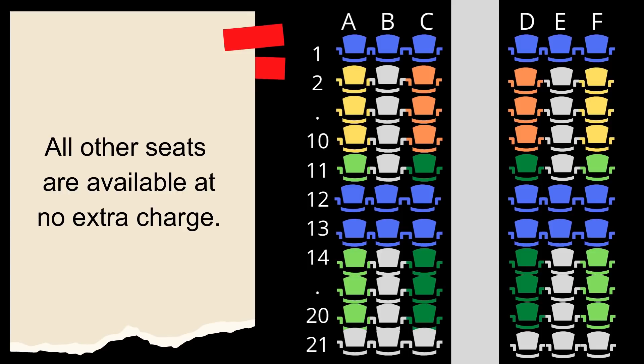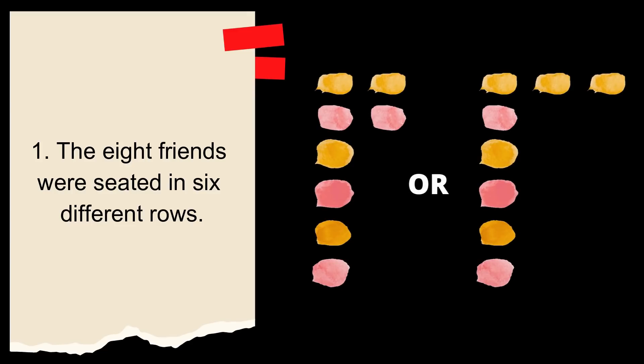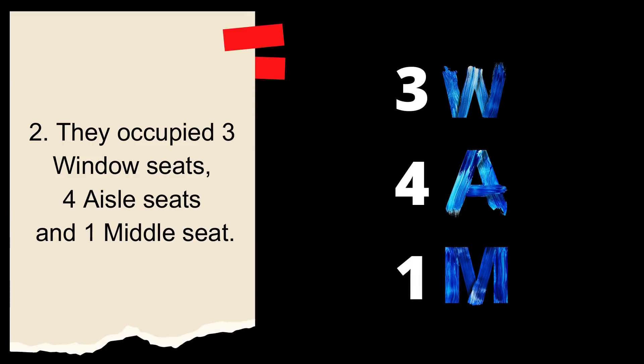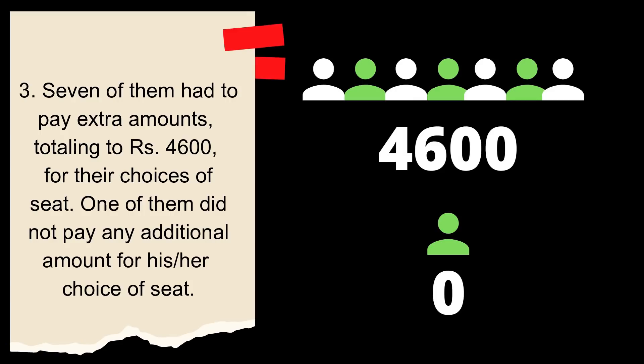So, let's read these six constraints. First, the eight friends were seated in six different rows. They occupied three window seats, four aisle seats and one middle seat. Seven of them had to pay extra amounts totaling to 4,600 for their choice of seats. One of them did not pay any additional amount for his or her choice of seat.